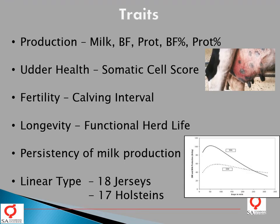Dairy cattle breeding deals with a multitude of traits. The obvious ones are those that influence production — the most obvious being milk production. For many years, dairy cows have been selected for higher milk production. But as uses of milk changed over time, butterfat became important, and protein became important for cheese making. Related traits include percentage butterfat and percentage protein in milk. These form the first group: production traits.